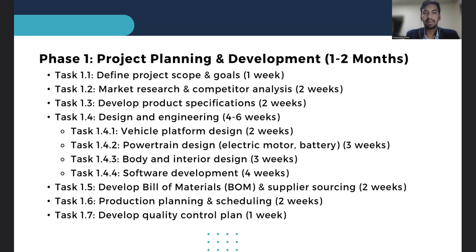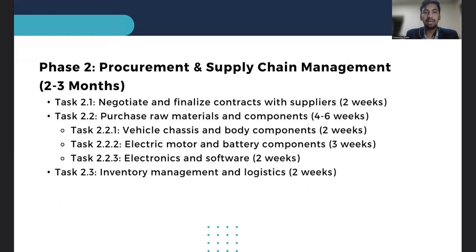The first phase — project planning and development — lasts one to two months. Here the project team defines goals, researches the market, and designs the vehicle, including the powertrain, body, software, and interior. They also identify suppliers and establish a production schedule with quality control in mind.